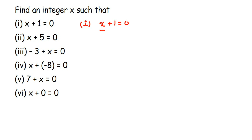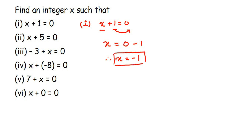I want the value of x, so I'm going to transpose 1 to the other side. Since 1 is positive, when transposed it becomes negative. So x equals 0 minus 1, which is minus 1. Therefore, x is equal to minus 1.